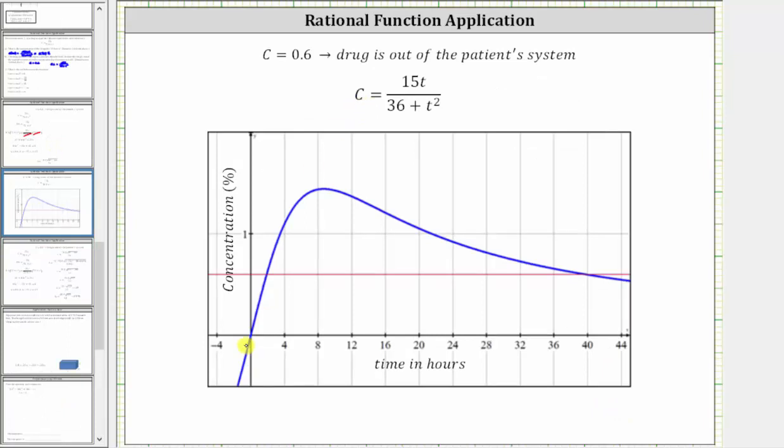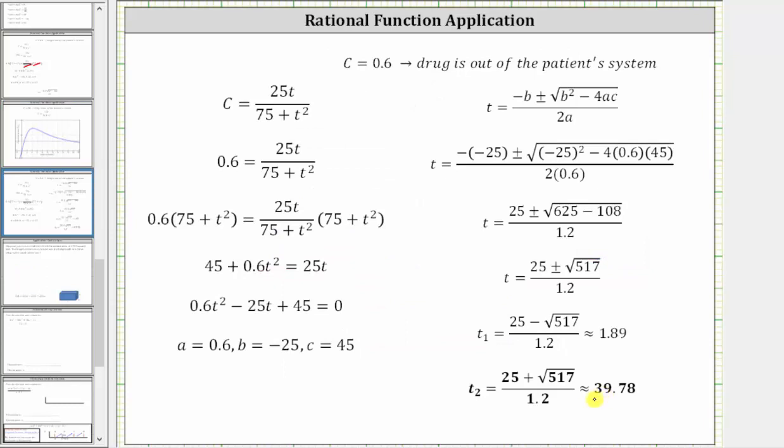If we take a look at this graphically, the function C is graphed in blue, and the constant C equals 0.6 is graphed here in red. Notice how the concentration is 0.6% twice: at the start, right after the injection, and at the end, just under 40 hours. So for part B, our answer is approximately 39.78 hours.